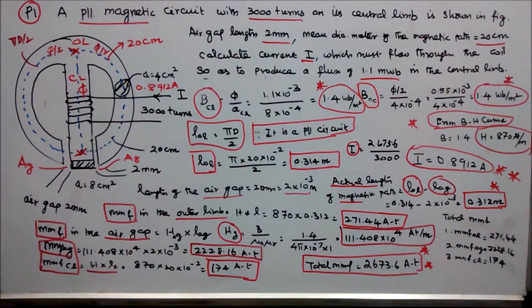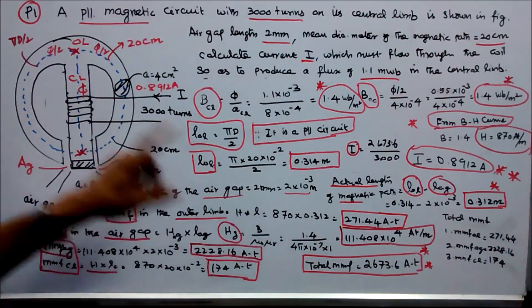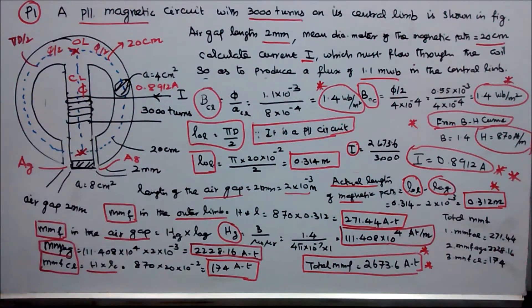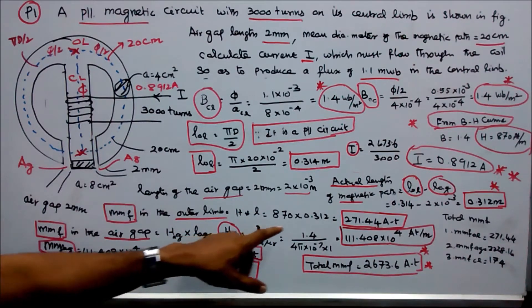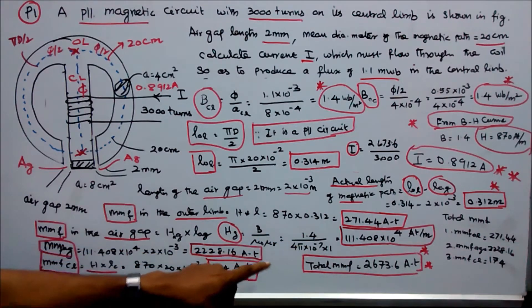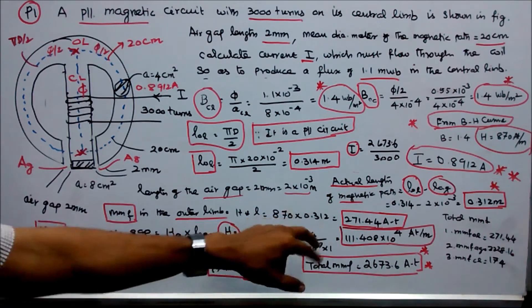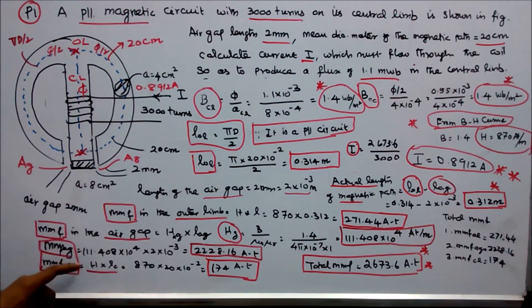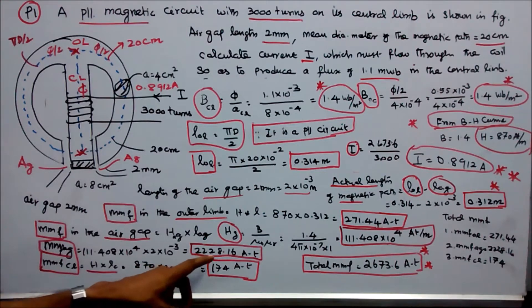Find the MMF in the outer limb. H × length = 870 × 0.312 = 271.44 ampere-turns. Similarly, find the MMF in the air gap. The magnetic intensity in the air gap: H = B / (μ₀ × μᵣ). B = 1.4, μ₀ = 4π × 10⁻⁷, μᵣ = 1. Therefore H = 111.408 × 10⁴ ampere-turns per meter. The air gap length is 2 mm.